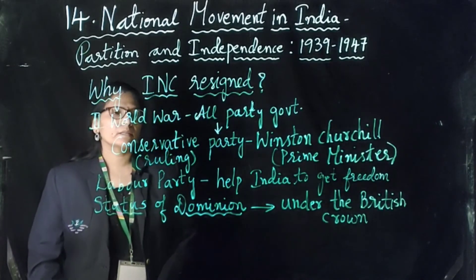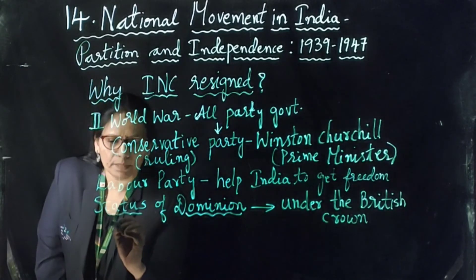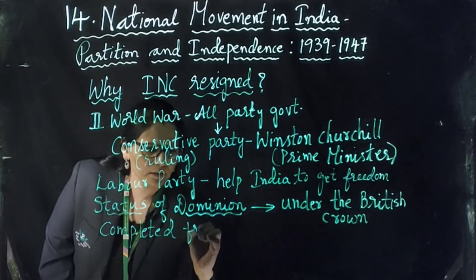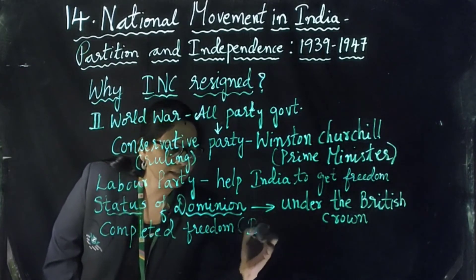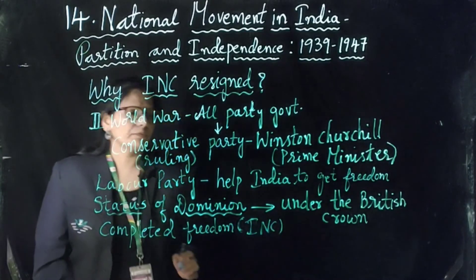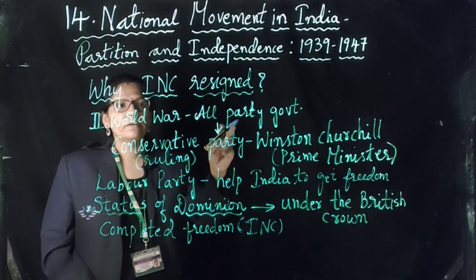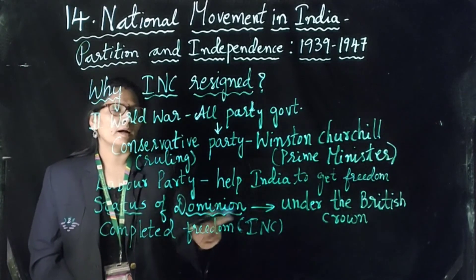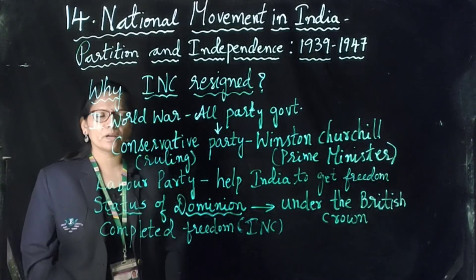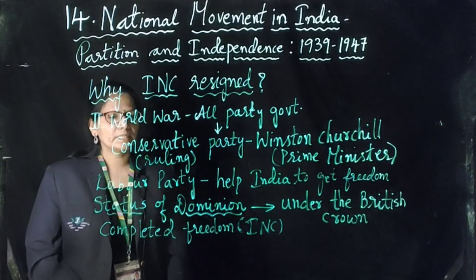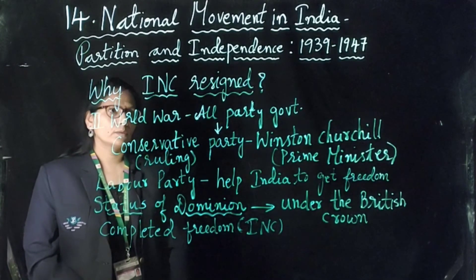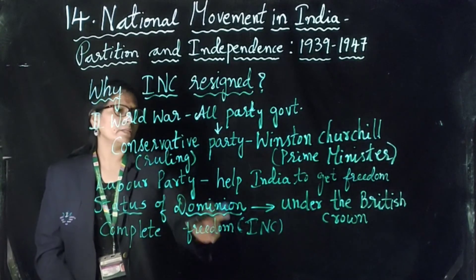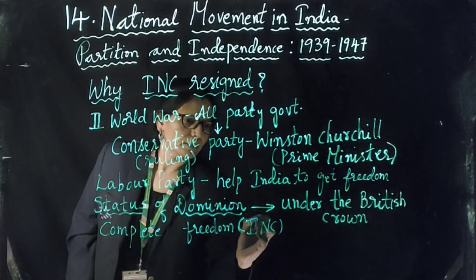The Indian National Congress wanted a promise of complete freedom. They said that if Indians were going to support Britain in the Second World War, the British must promise complete freedom to India after the war. However, Britain did not make that promise — they only offered Dominion status.